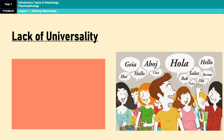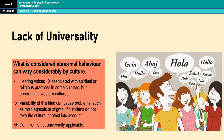However, a significant limitation of deviation from social norms is its lack of universality, because what is considered abnormal can vary greatly across different cultures. For example, in some Western cultures, hearing voices is typically considered a symptom of severe mental disorder like schizophrenia. However, in other cultures, hearing voices might be regarded as a normal experience associated with spiritual or religious practices. This variability can potentially lead to misdiagnosis, inappropriate treatment, and misunderstanding of cultural practices if clinicians do not take cultural context into account. It also means that deviation from social norms cannot be applied equally across all cultures, because what is considered normal differs everywhere.